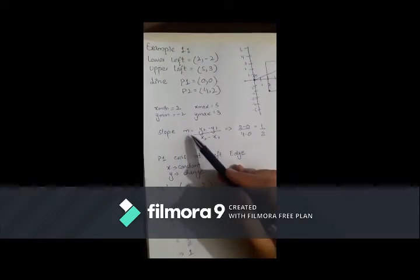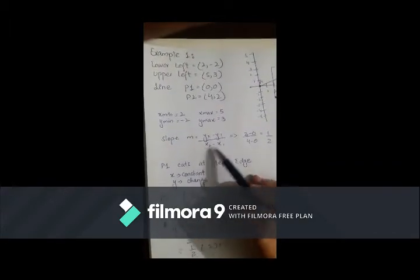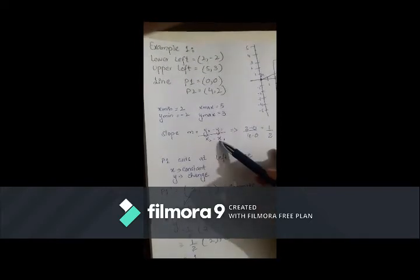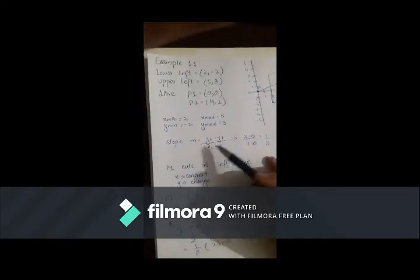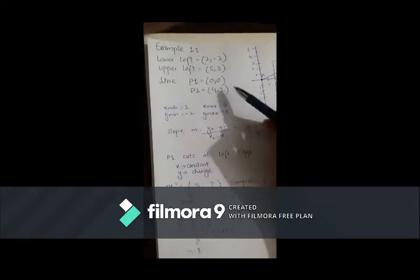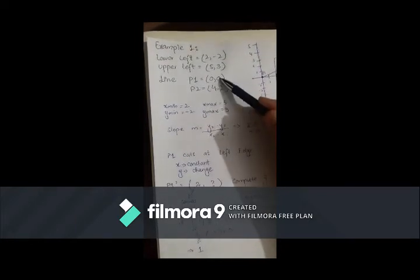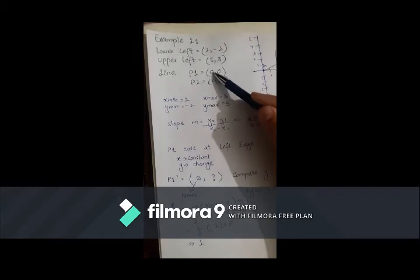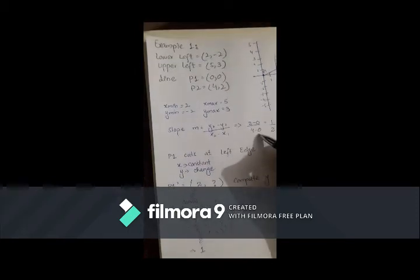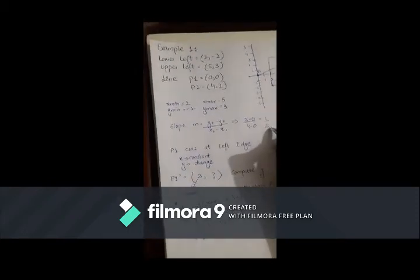Then, slope use. Slope m is equal to y2 minus y1 over x2 minus x1. This equation will be used. Y2 has 2, Y1 has 0, X2 has 4, and X1 has 0. So, we will divide it. The answer will be 1 over 2.